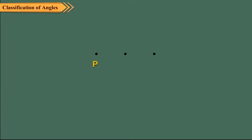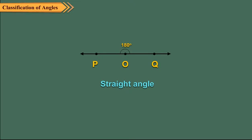An angle whose measure is 180 degrees is called a straight angle. Two opposite rays with the same endpoint form a straight angle. Here angle POQ is equal to 180 degrees, so it is a straight angle.